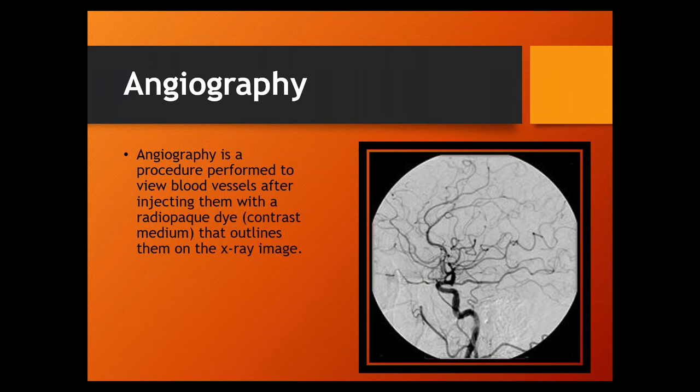Angiography is the viewing of blood vessels - a procedure performed to view blood vessels after injecting them with a radiopaque dye. That's the contrast fluid in this syringe right here - a special fluid that outlines the images on the X-ray image. This particular picture is a fluoroscopic image, which is the opposite of a radiographic image: white background with black images for the body parts we're interested in seeing.